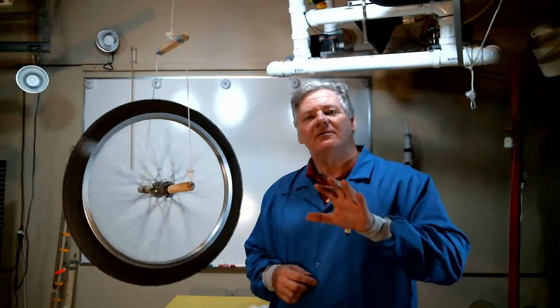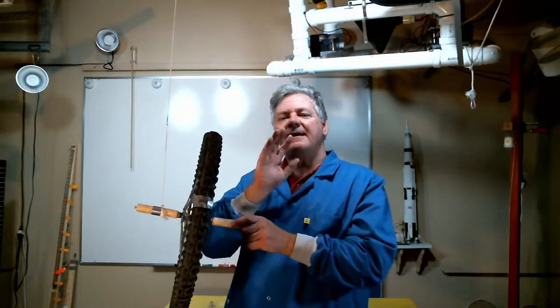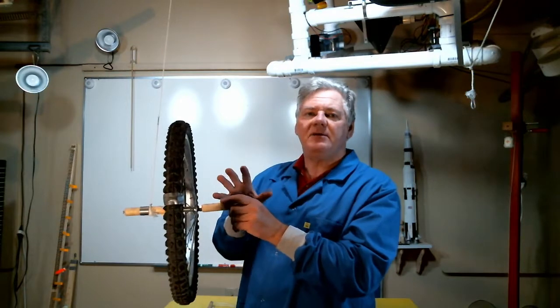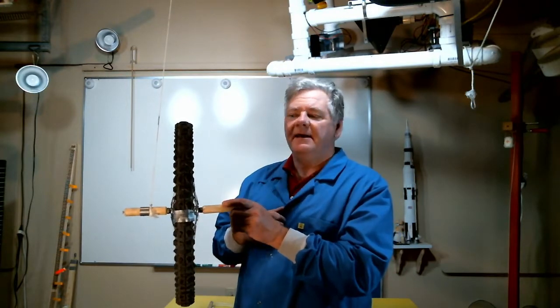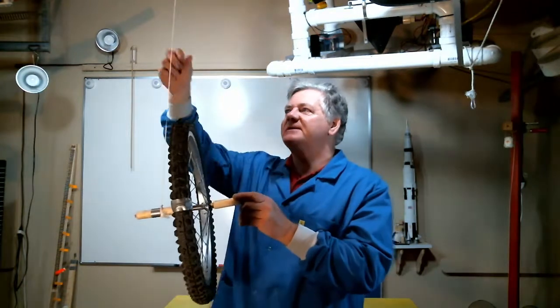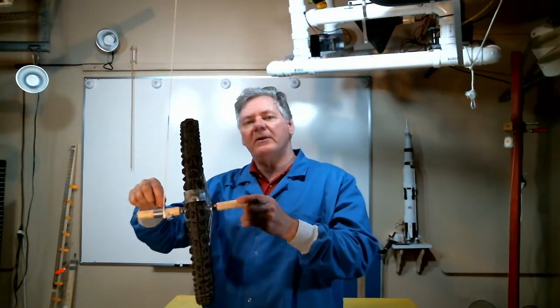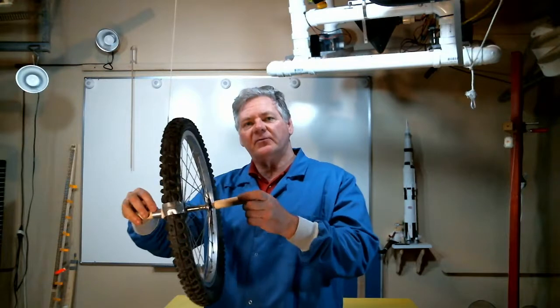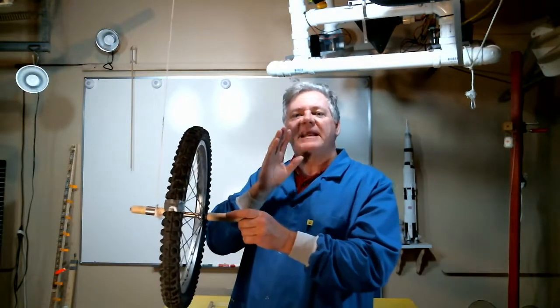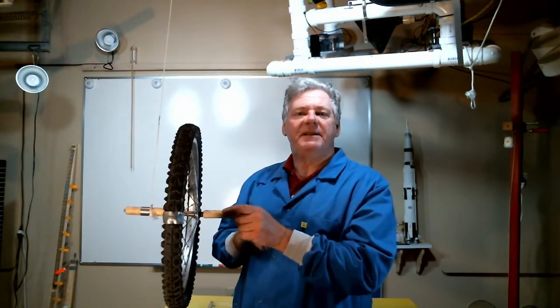Now let's look at the concept of gyroscopic precession. To demonstrate gyroscopic precession I need to subject my wheel to a constant torque. The best way to do this is to use gravity. So I'm going to suspend the wheel from one string which is attached to only one axle, with the other axle free. Now let's take a look at an animation to see what happens with a non-spinning system.